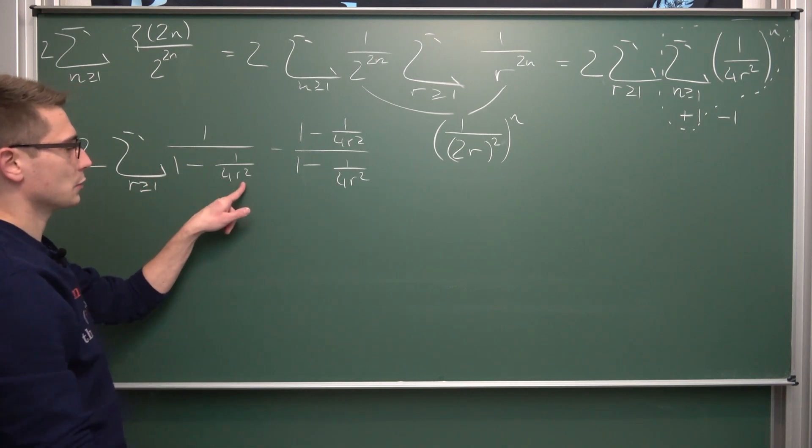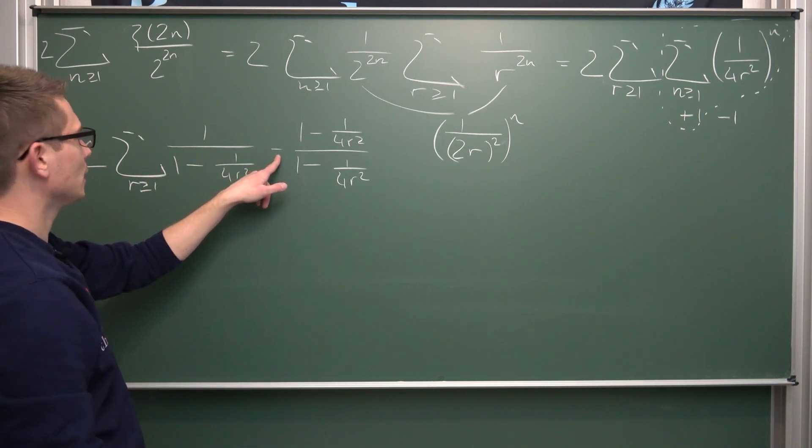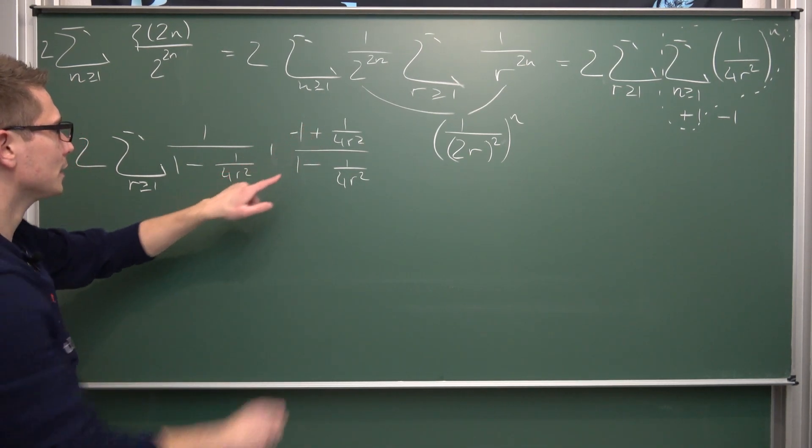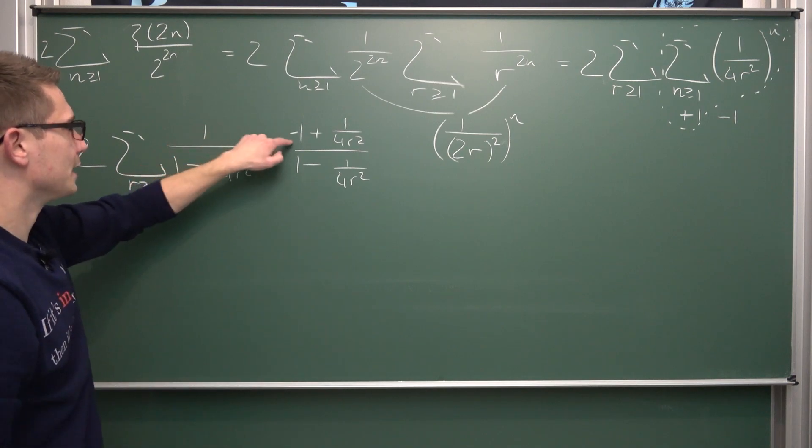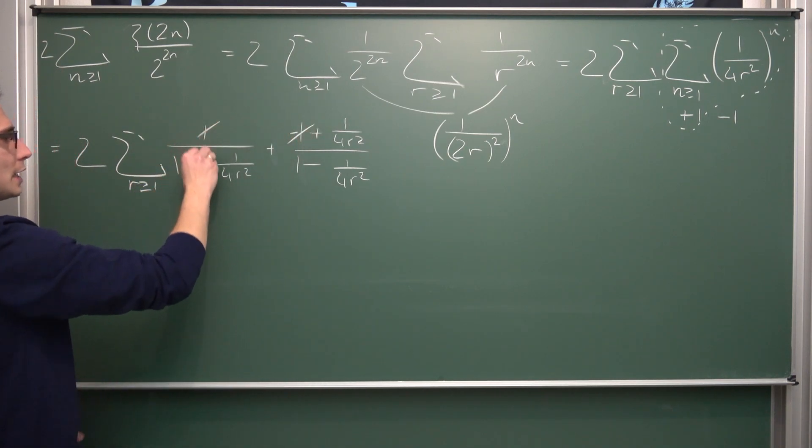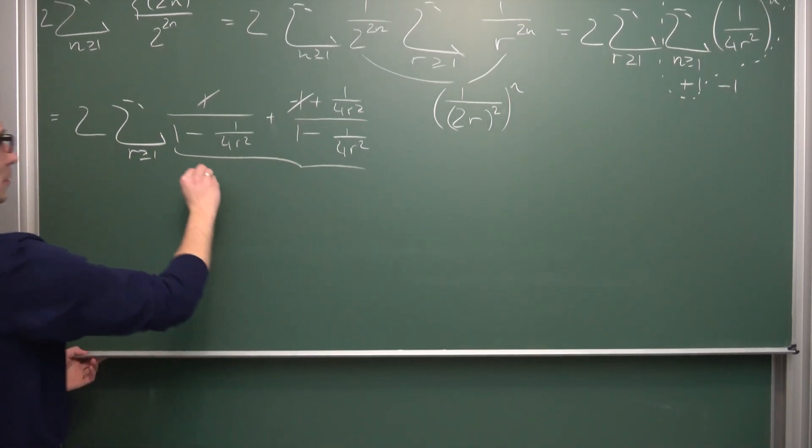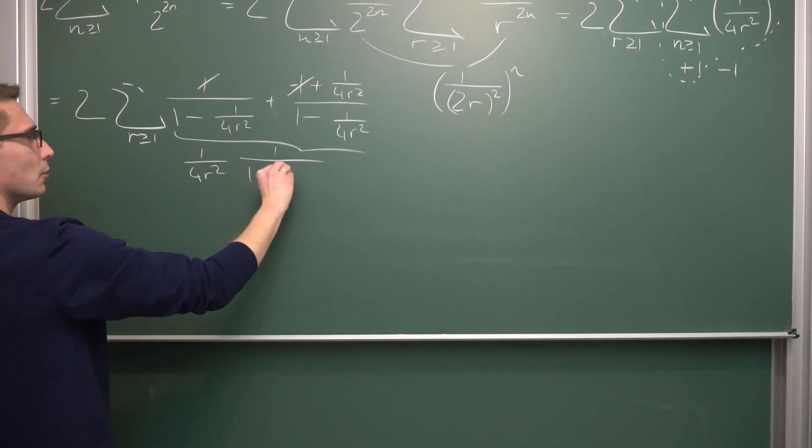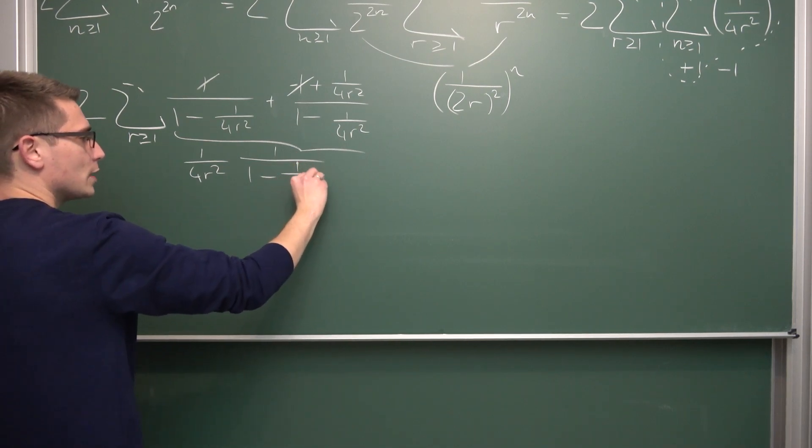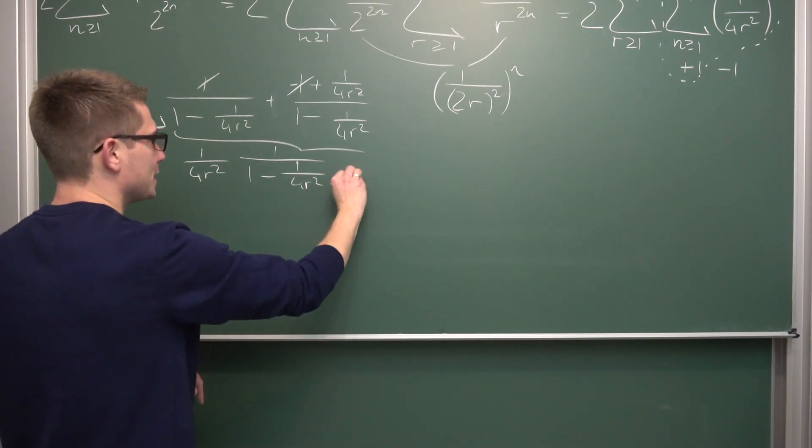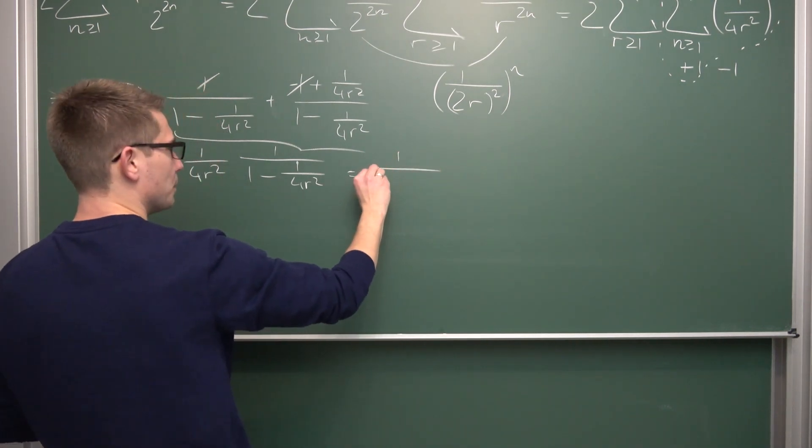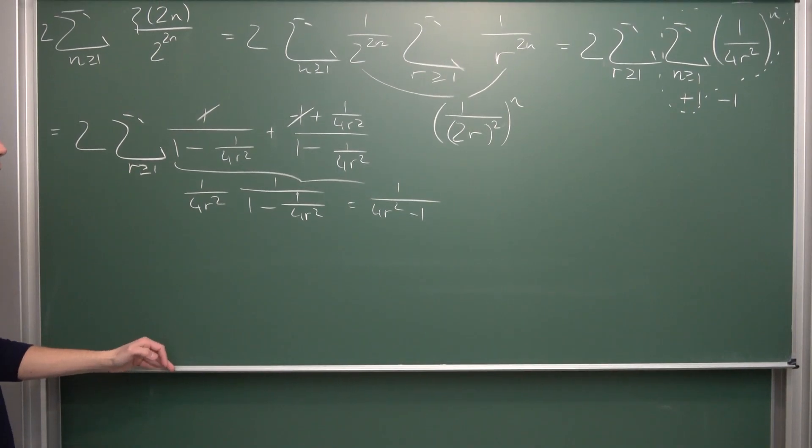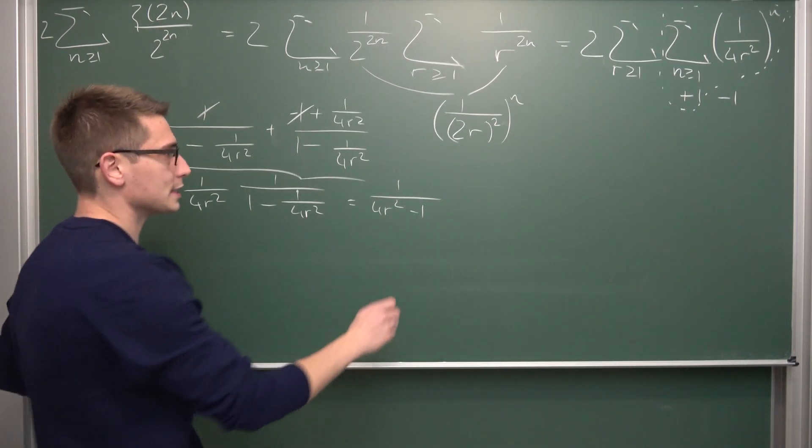I could probably have just expanded this fraction by 4r squared over 4r squared to get rid of this right here. We can track the negative sign into here. And hence this 1 and negative 1 is going to cancel out. Leaving us overall with, we are going to get 1 over 4r squared times 1 divided by 1 minus 1 over 4r squared. If we were to track this 4r squared into the denominator we are just going to get 1 divided by 4r squared minus 1.